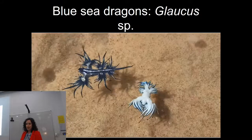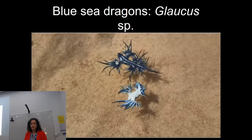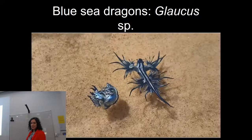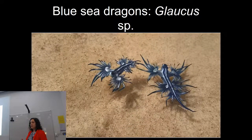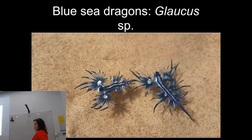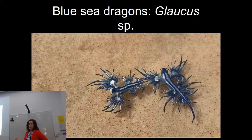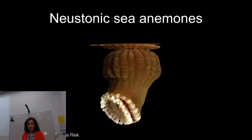Glaucus are probably the most well-known non-infamous members of the neuston — there are a lot of Etsy fans of Glaucus. Their underside is blue to blend into the surface of the ocean, and the top side is white to blend into the clouds — counter-camouflage so predators from below and above both have a hard time seeing them. They swallow little air bubbles and crawl around on the ocean surface to stay afloat.